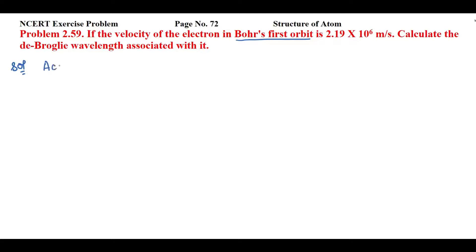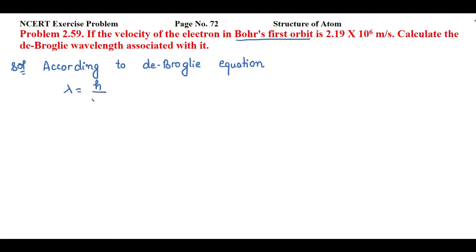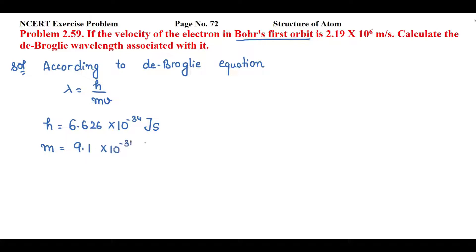For this we will write the de Broglie equation first. According to the de Broglie equation, lambda (wavelength) equals h divided by mv. We have to find the value of wavelength. Here h is Planck's constant: 6.626 × 10⁻³⁴ joule second. Mass is the mass of the electron, which is 9.1 × 10⁻³¹ kg.